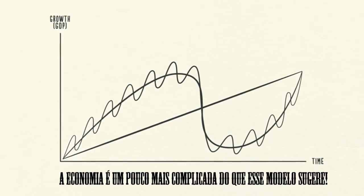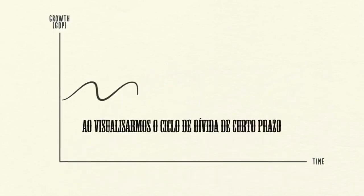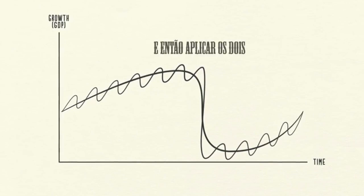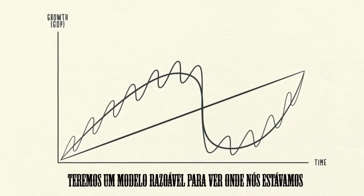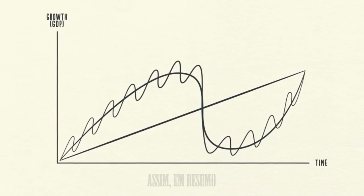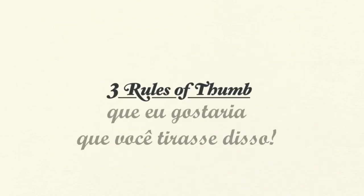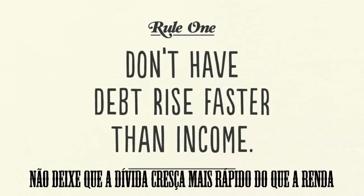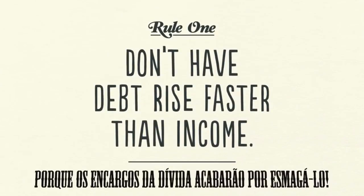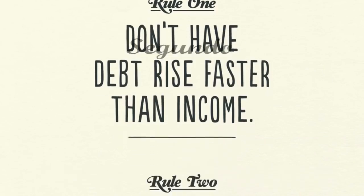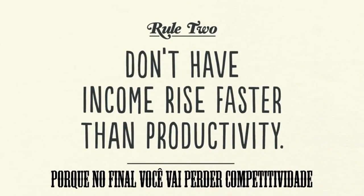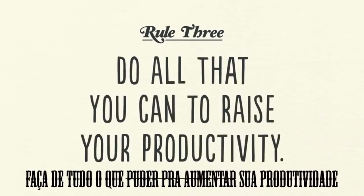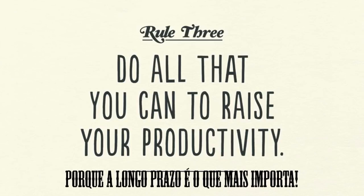In closing, the economy is a little bit more complicated than this template suggests. However, laying the short-term debt cycle on top of the long-term debt cycle and then laying both of them on top of the productivity growth line gives a reasonably good template for seeing where we've been, where we are now, and where we're probably headed. In summary, there are three rules of thumb: First, don't have debt rise faster than income, because your debt burdens will eventually crush you. Second, don't have income rise faster than productivity, because you'll eventually become uncompetitive. And third, do all that you can to raise your productivity, because in the long run, that's what matters most.